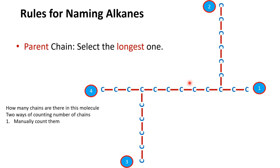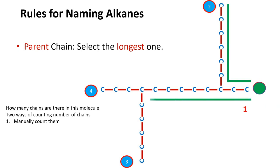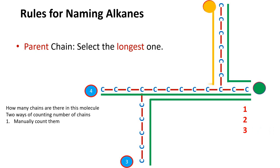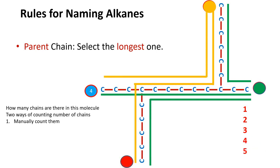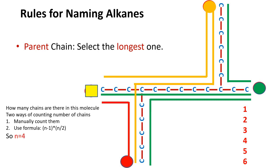First count the number of endpoints in the molecule: in this example there are 4 endpoints. You connect each end with every other end. Starting from each of the first three ends, you count: chain 1, chain 2, chain 3 from the first end; chain 4 and chain 5 from the second end; and chain 6 from the third end — giving 6 chains total. Using the formula: (n−1) × (n/2), where n is the number of endpoints. With n=4: 3 × 2 = 6. Both methods give the same answer.